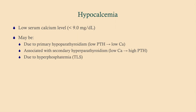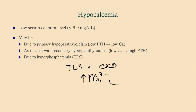Another cause is hyperphosphatemia. Usually what happens is tumor lysis syndrome or chronic kidney disease causes increased phosphate, which binds calcium, resulting in a lower calcium level. Think of a patient with long-standing kidney disease or a patient on chemotherapy — either way, that's going to be obvious in the history. You don't have end-stage renal disease or cancer on chemotherapy without knowing it, so this will come up in your history.